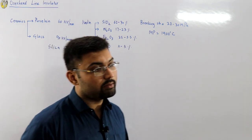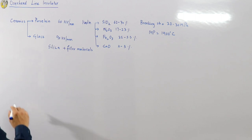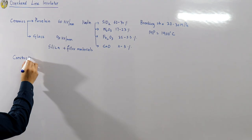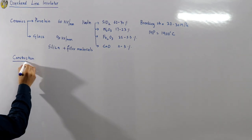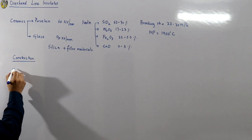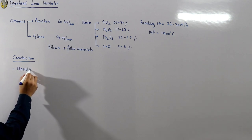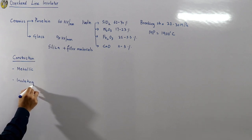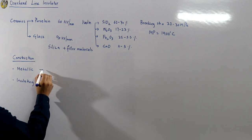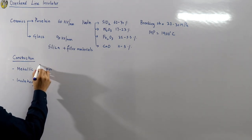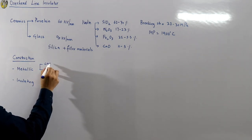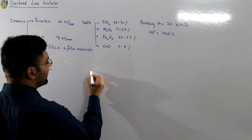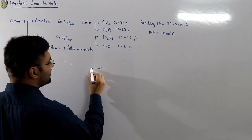Let's talk about the construction of these insulators. In the construction you have a metallic part and an insulating part. In the metallic part you have two things: number one is your cap, and the second is your pin, and in between them is a sandwiched insulator.